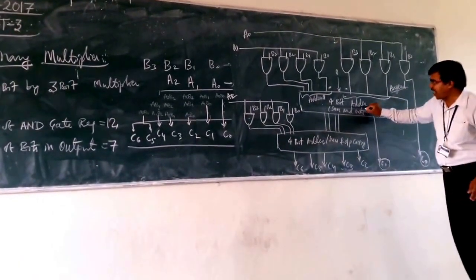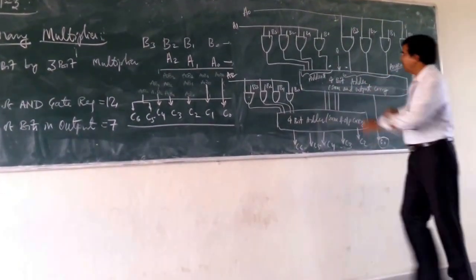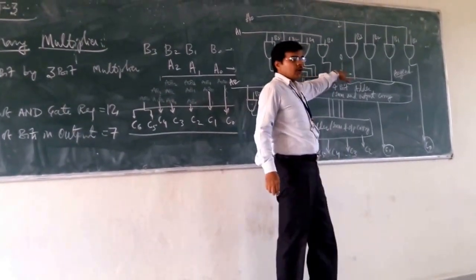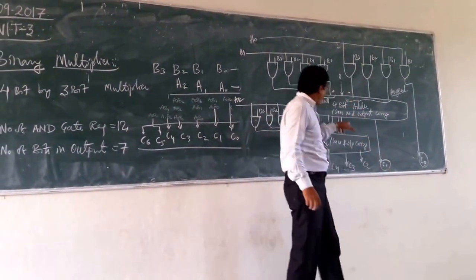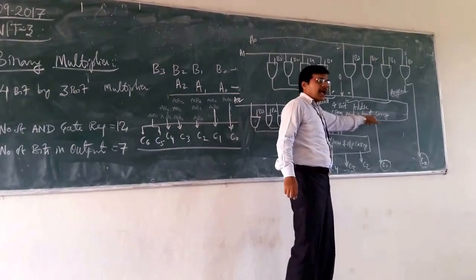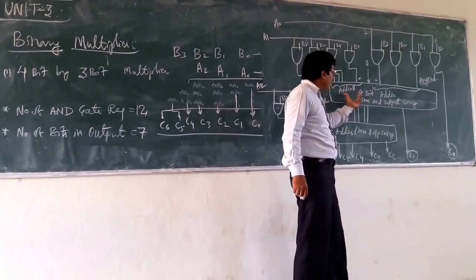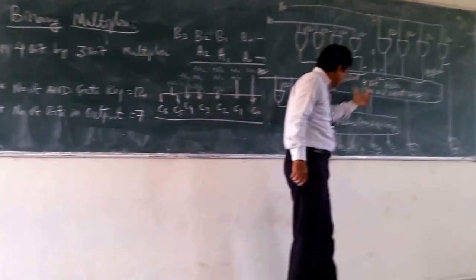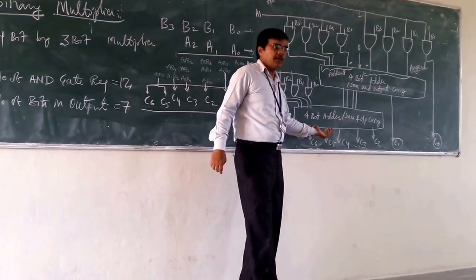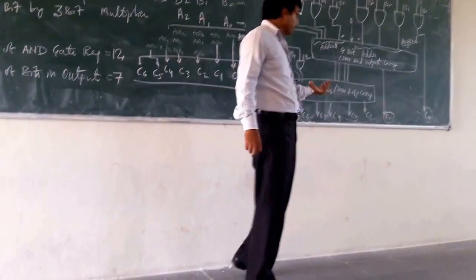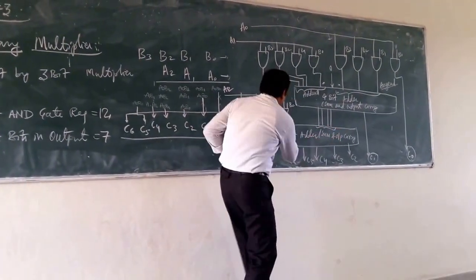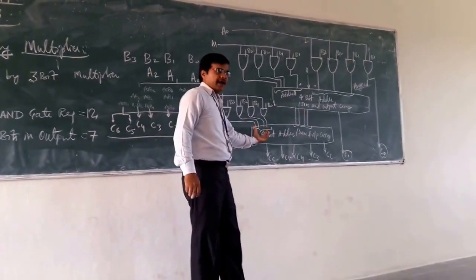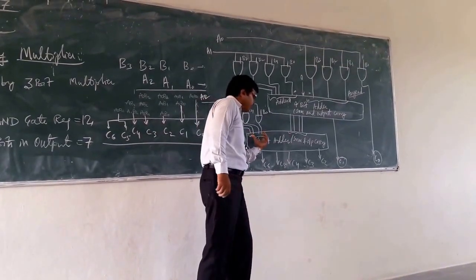In case of your first adder, in the operand, here we are introducing one, C0. And here we are using the C1. Now, whatever the sum and output that you are having from your output of your first adder, 4-bit adder, we are taking it for the second 4-bit adder. Here, these 4 are in your operand, and these 4 are added.